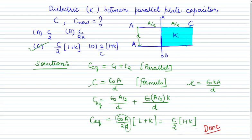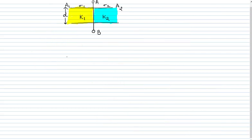In the next numerical, we are given a parallel plate capacitor with two points A and B, where the surface charge density is σ₁ for the first half and σ₂ for the second half.